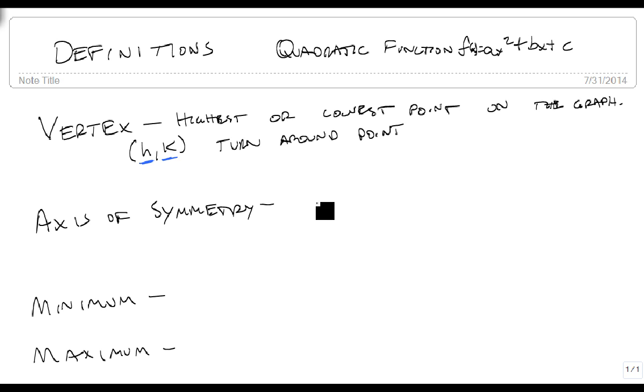The axis of symmetry is a line at x equals h, which is what we're symmetric about. So if you fold it along this line, you'll get the same graph on both sides.